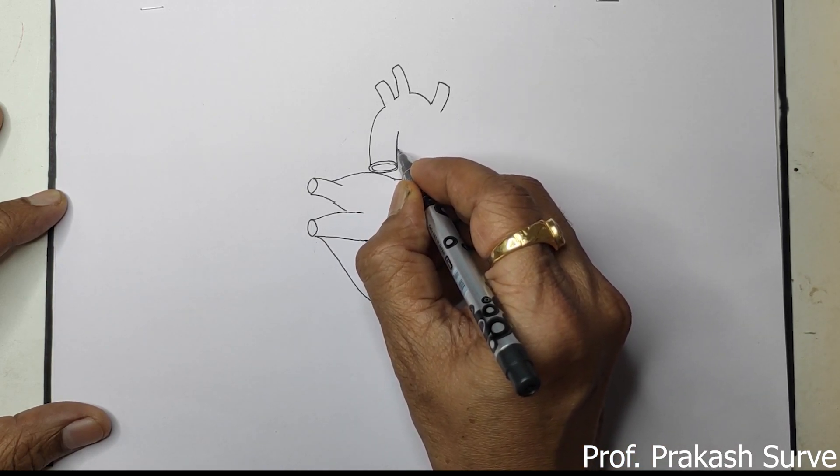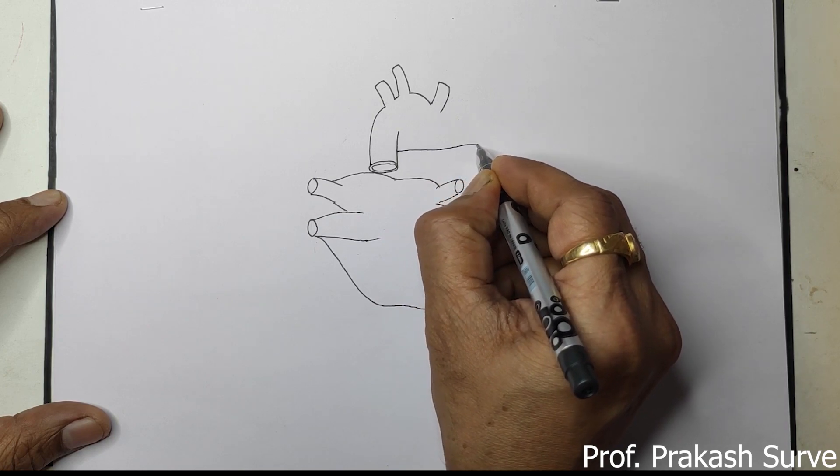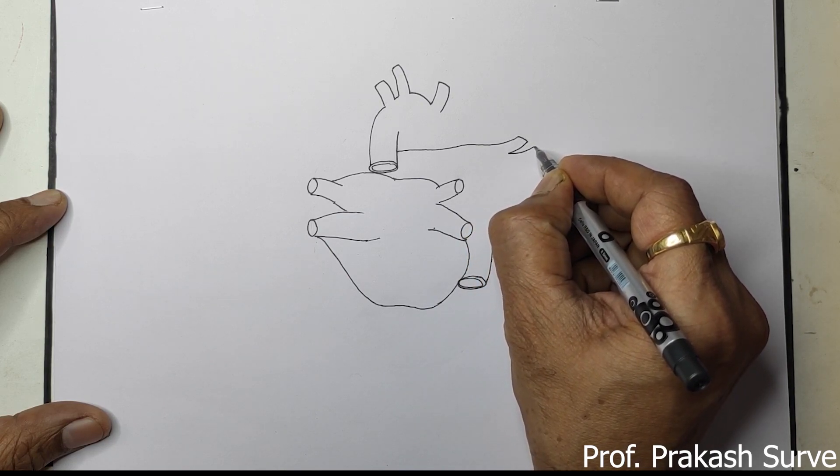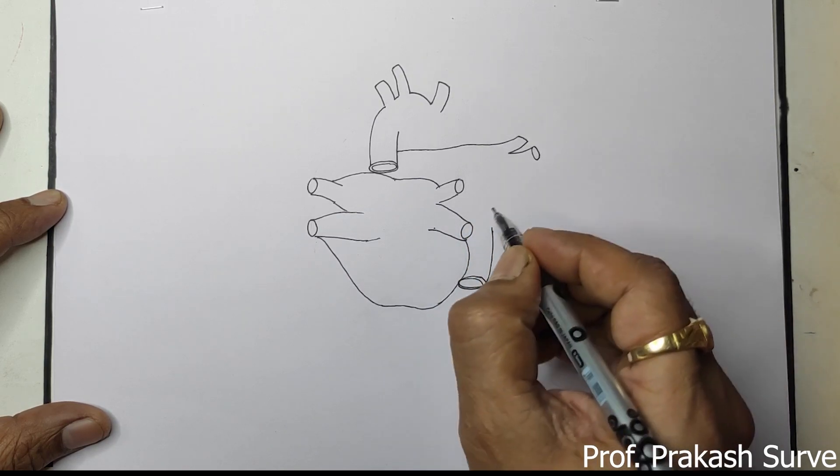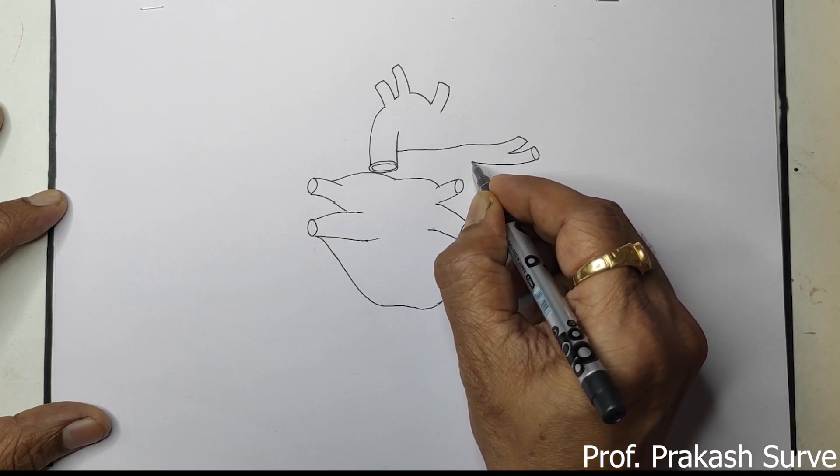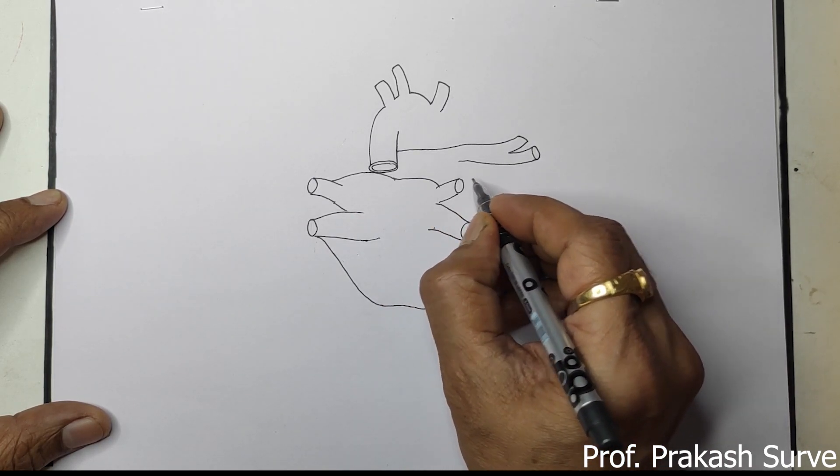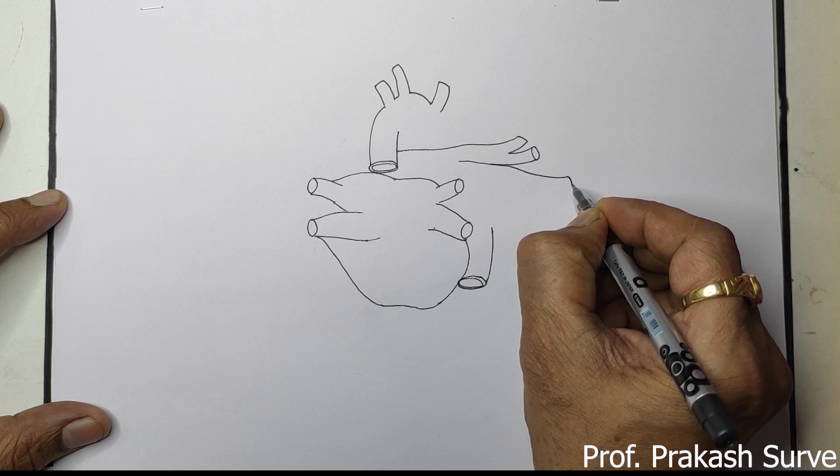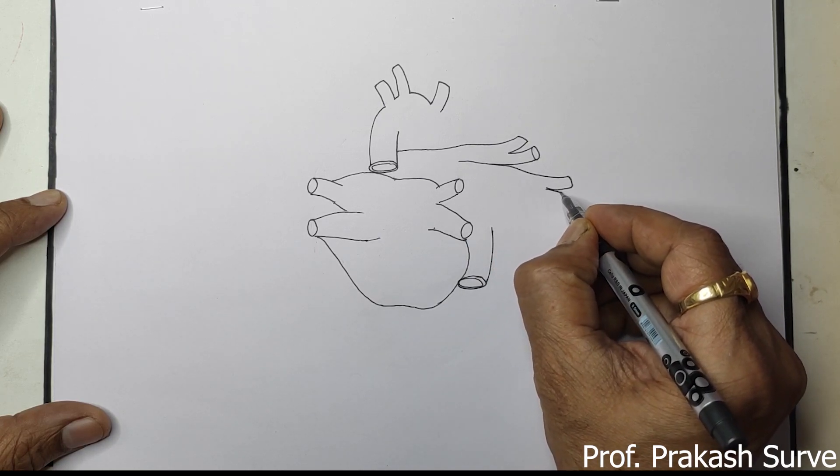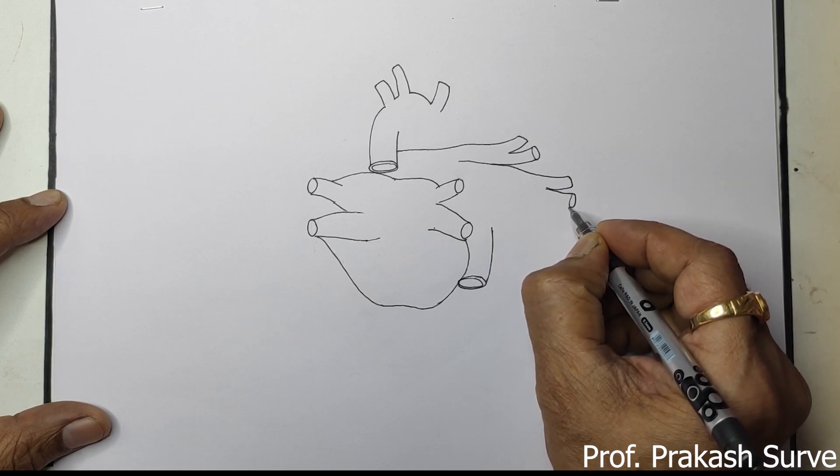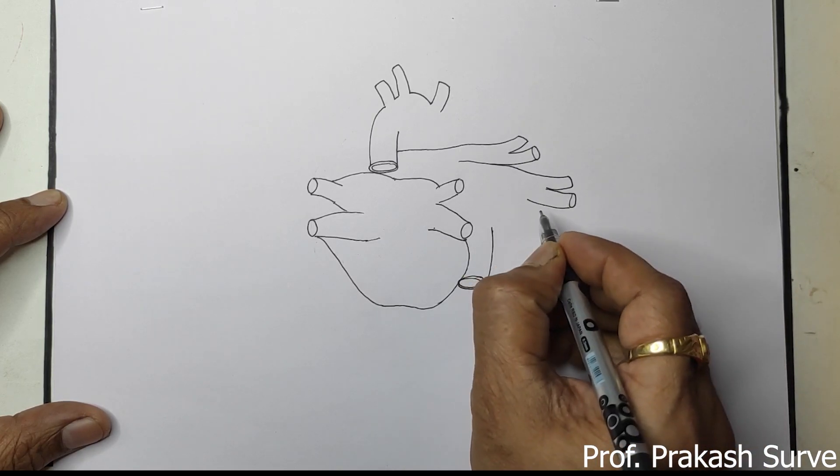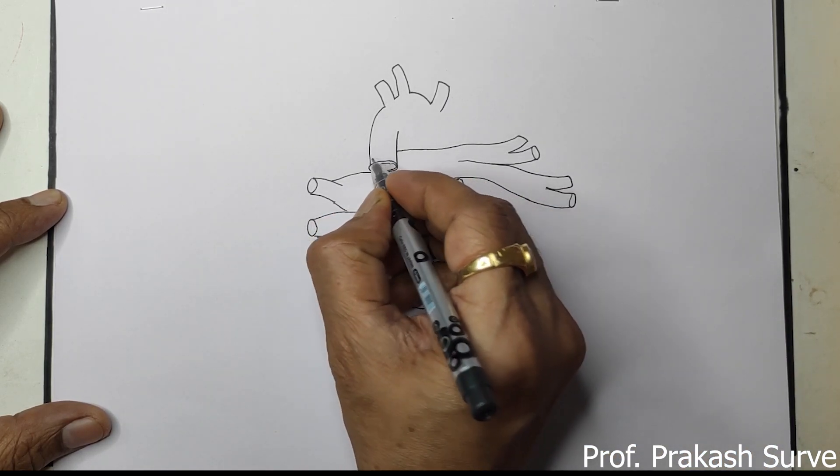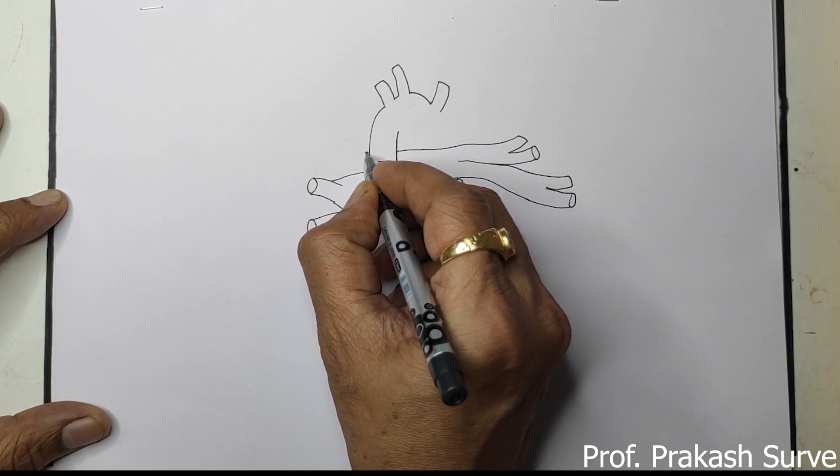Now next here, make like the branch of the tree, like that structure. So this will be the right pulmonary artery. Continue this, bring it here, and this is the left pulmonary artery.